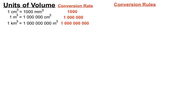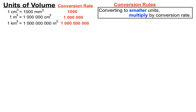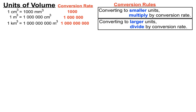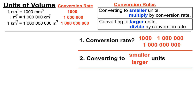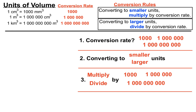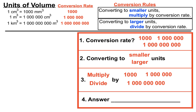When we're converting, we follow some conversion rules. If we're converting to smaller units, we multiply by the conversion rate. If we're converting to larger units, we divide by the conversion rate. We use a decision table: first, determine the conversion rate depending on which units we're converting from and to — it'll be either a thousand, a million, or a billion. Then determine whether we're converting to smaller or larger units, which tells us whether to multiply or divide. Finally, we move the decimal point by one place for every zero.